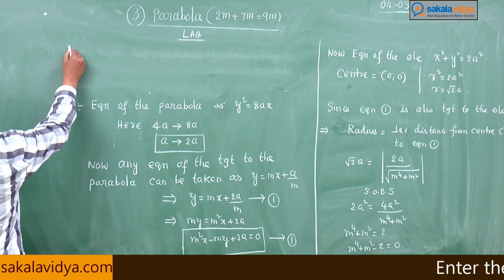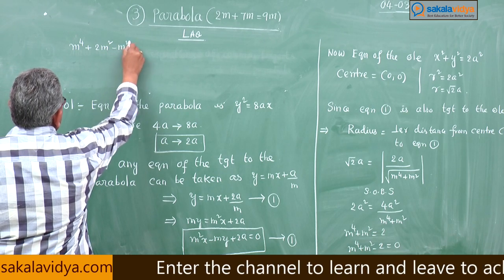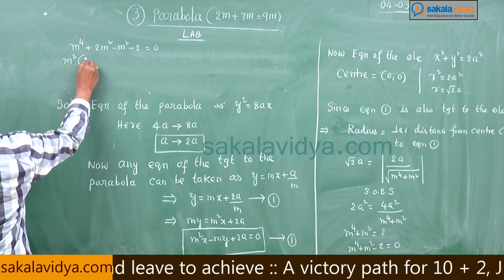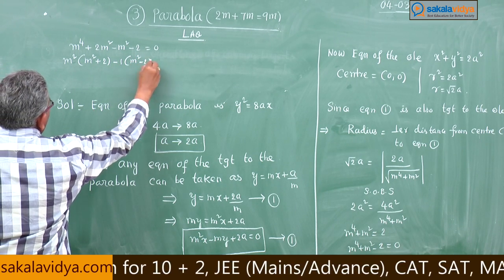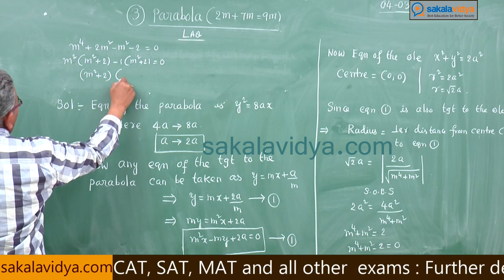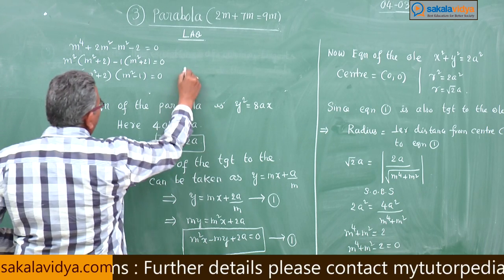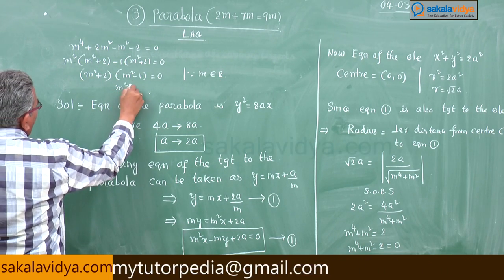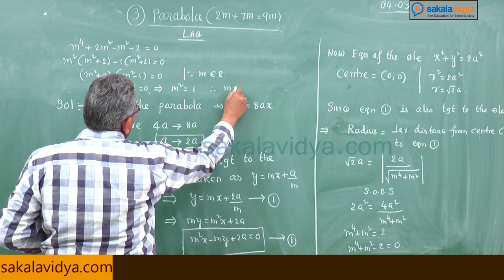Solving the biquadratic: m⁴ + 2m² − m² − 2 = 0. Taking m² common: m²(m² + 2) − 1(m² − 2) = 0, giving (m² + 2)(m² − 1) = 0. Since m is real, we discard m² + 2 = 0, leaving m² − 1 = 0, so m² = 1 and therefore m = ±1.